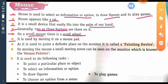It is used by moving it on a mouse pad. As it is used to point a definite place on the monitor, it is called a pointing device. On moving the mouse, a small moving arrow can be seen on the monitor which is known as Mouse Pointer.